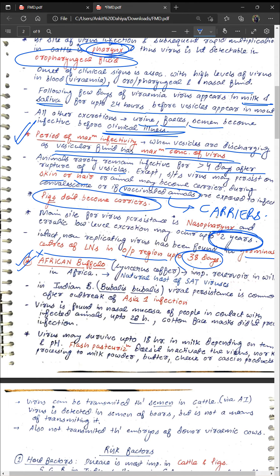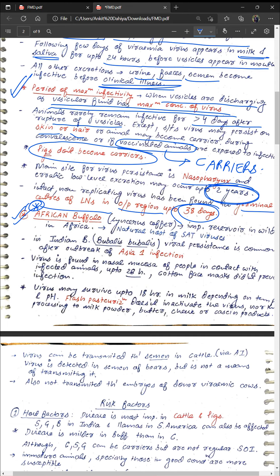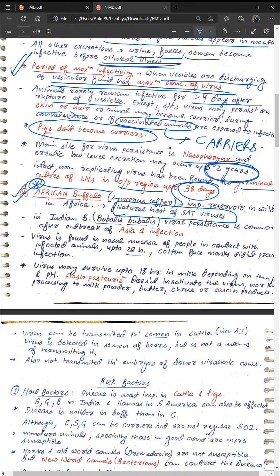Regarding wild reservoirs, the African buffalo is the most important reservoir of the virus in the wild and is the natural host of South African Territory strains. In Indian buffalo, virus persists after Asia 1 infection. The virus has also been reported from nasal mucosa of people working near infected animals for up to 28 hours — meaning farm staff can transmit disease between animals — and it was shown that coat and face mask did not prevent this.